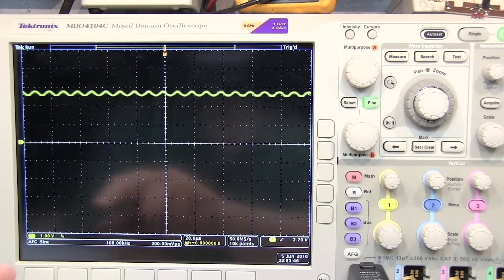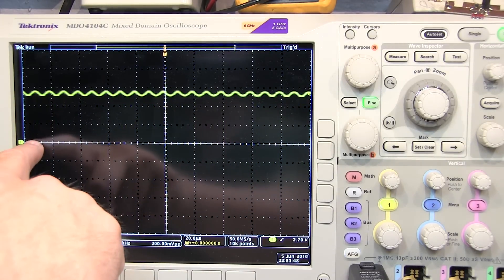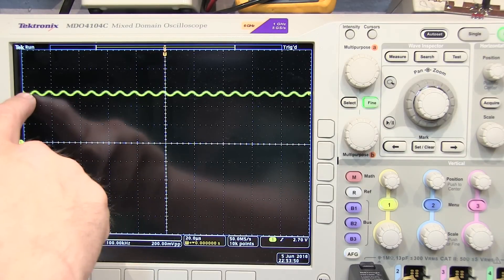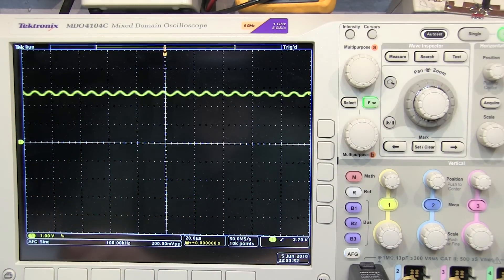Okay, so we're back to where we started, 1 volt per division here, DC coupled, and I can actually see my signal riding on the 2.7 volt bias.